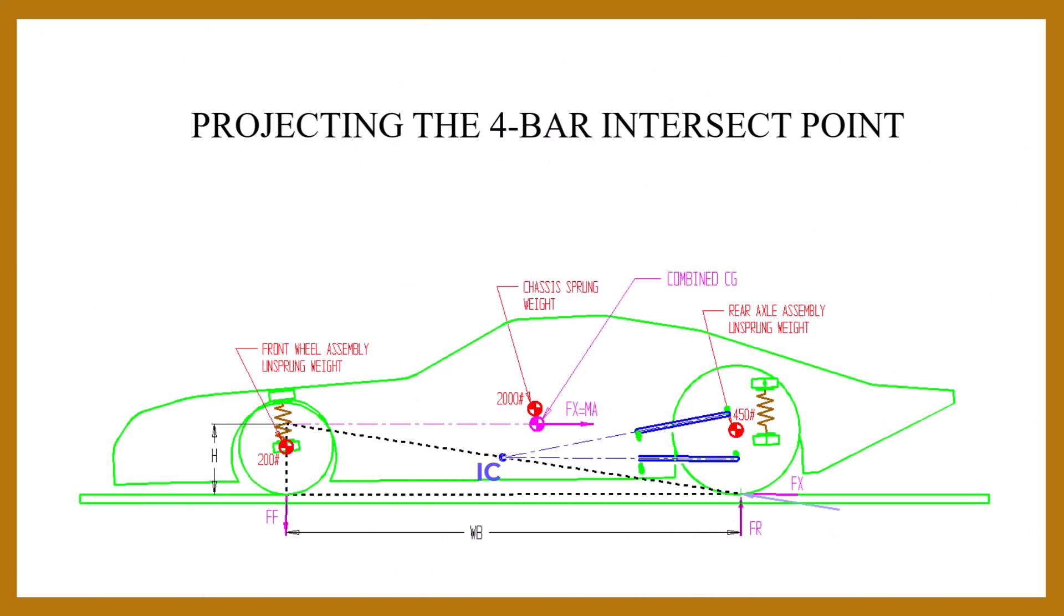We'll now look at the 4-bar linkage and their projections to the instant center. If the linkage is such that the instant center lies on the neutral line, there is no squat or separation. 100% of the load is transmitted through the 4-bar linkage and none goes through the springs.